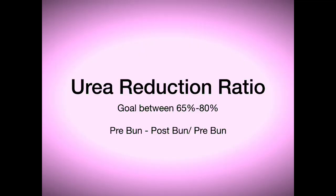Another number we look at is called the urea reduction ratio — that's the URR. When the person first gets on the machine, we draw a pre-BUN, which is the blood urea nitrogen. We draw a post-BUN, which is the blood urea nitrogen after treatment, and we figure out how much percentage was removed. The goal is to do 65% or better.